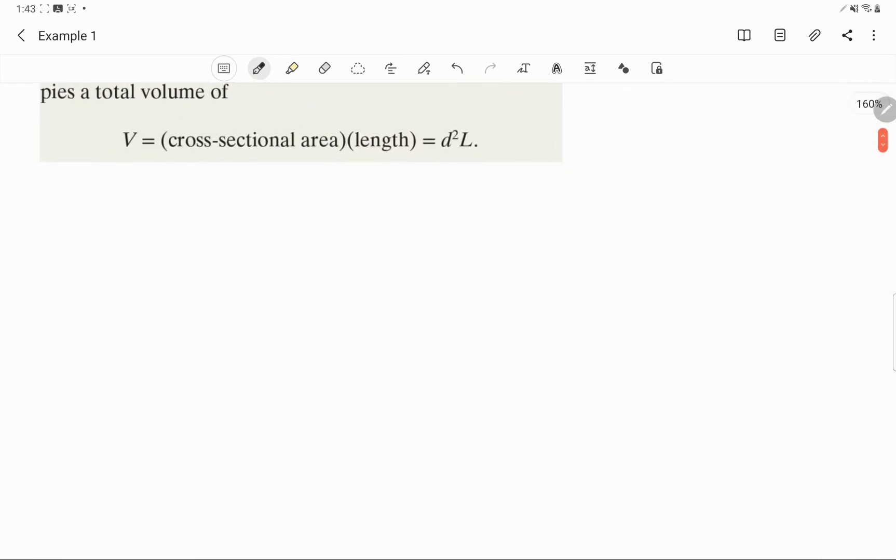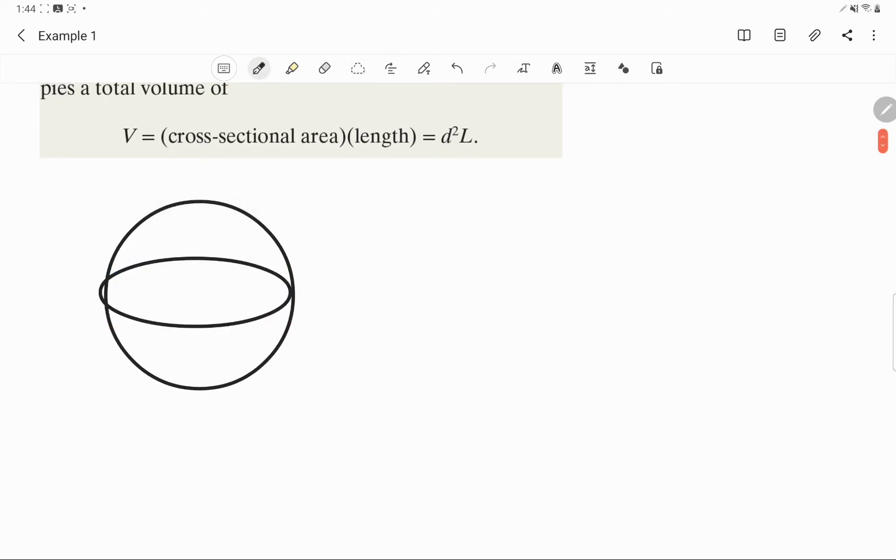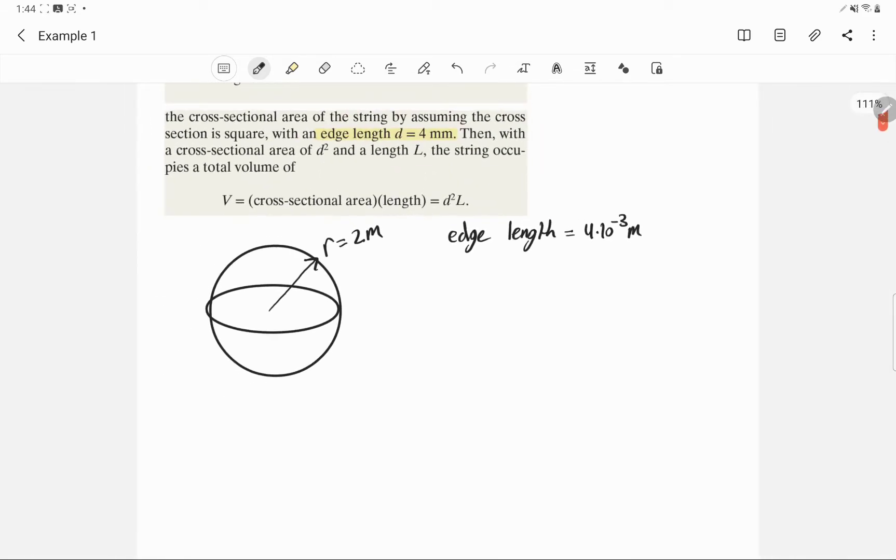So I'm going to go ahead and draw out our ball of string. And we know that our radius is equal to 2 meters. So the information we have in the problem so far is we have our radius. We have our edge length of the string is equal to 4 millimeters. We can also call that 4 times 10 to the negative 3 meters. Keep everything in one unit.